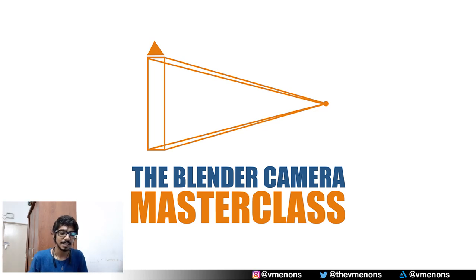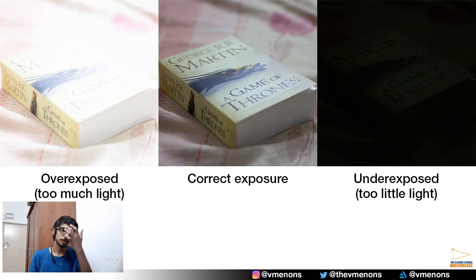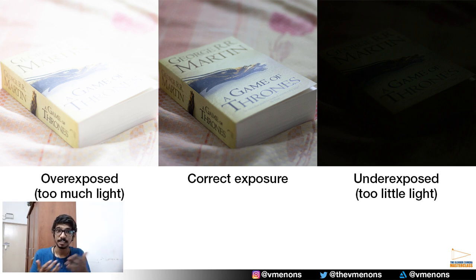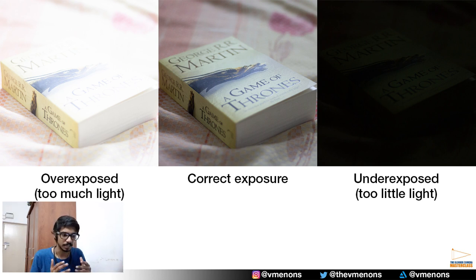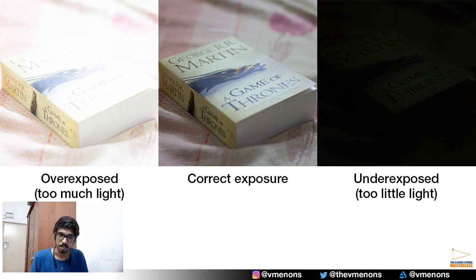In photography there is something known as the exposure triangle. Exposure basically means how bright your image is, how much light is in your image. If there's too much light your image would get washed out and it's termed as an overexposed image, and if there is too little light your image would be very dark or black and it is known as an underexposed image.